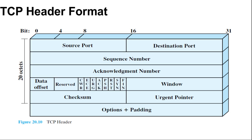Next is acknowledgement number, also 32-bit. It contains the sequence number of the next data octet that the TCP entity expects to receive. Then data offset, a 4-bit number of 32-bit words in the header. Next is reserve, also 4-bit, reserved for future use and normally not used. Next is flags, which contains 6 bits. For each flag, if set to 1, the meaning is as follows: CWR (congestion window reduce) and ECE. The CWR and ECE bits are defined in RFC 3168 and are used for the explicit congestion notification function.